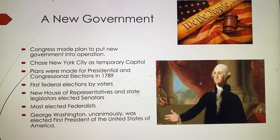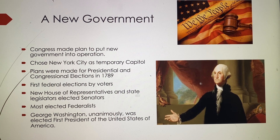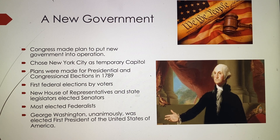Congress then made plans to put the new government into operation. New York City was chosen as the temporary capital of the United States, and plans were made for presidential and congressional elections in 1789. George Washington was unanimously elected as the first president of the United States — not a single vote went against him.